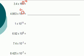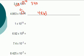Let's check our answers. The first one: the decimal point must move 2 spaces to the right, so that equals 340. The second one: negative 3 means the decimal point must move 3 spaces to the left. So that number equals 0.004863.